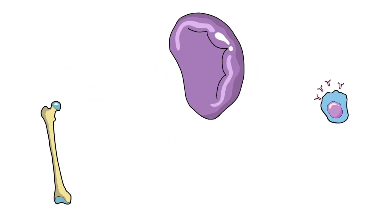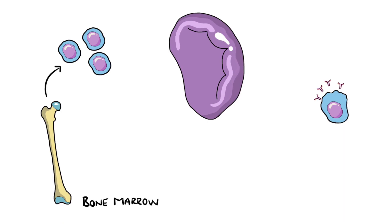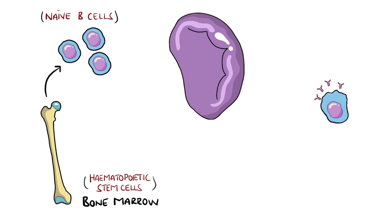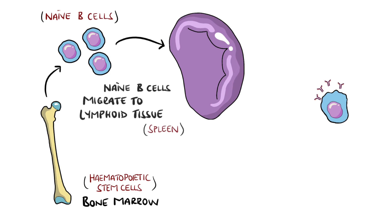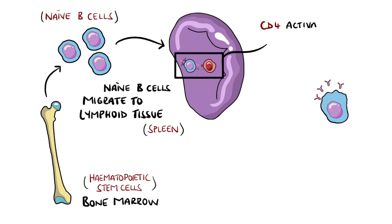In normal circumstances, B-cells originate in the bone marrow from hematopoietic stem cells. The naive B-cells will then migrate to lymphoid tissues like the spleen or lymph nodes, where they are activated by CD4 T-cells.